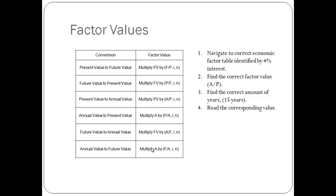The factor value tables. Go to the correct table identified by an interest rate of 4%. Then, find the correct factor value that you are looking for. In this case, it is A over P. And finally, navigate to the intersection of the correct amount of years, which is 15 years, and read the corresponding value.